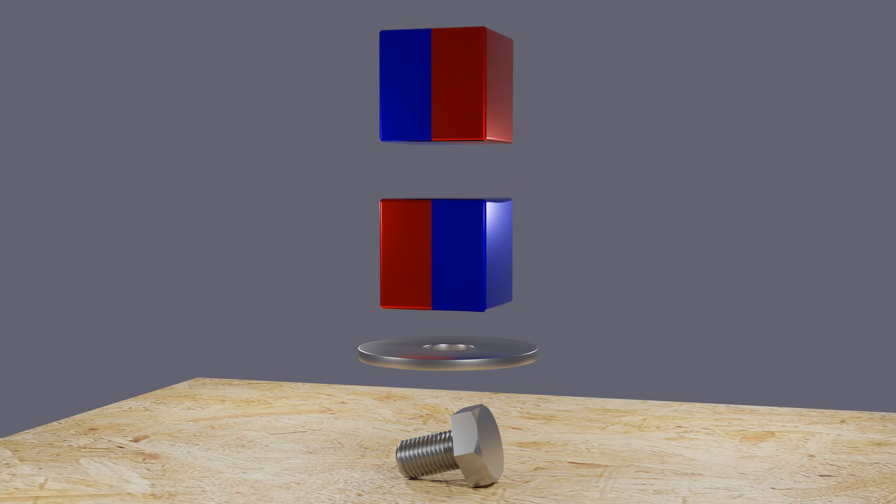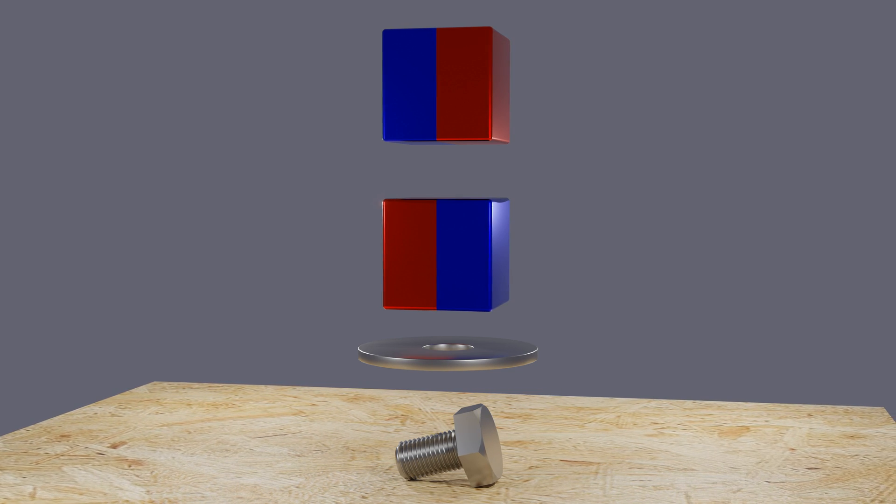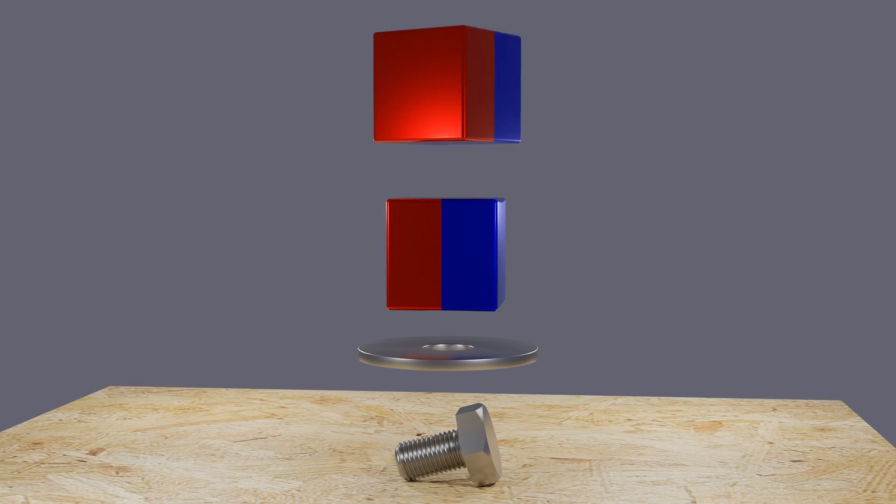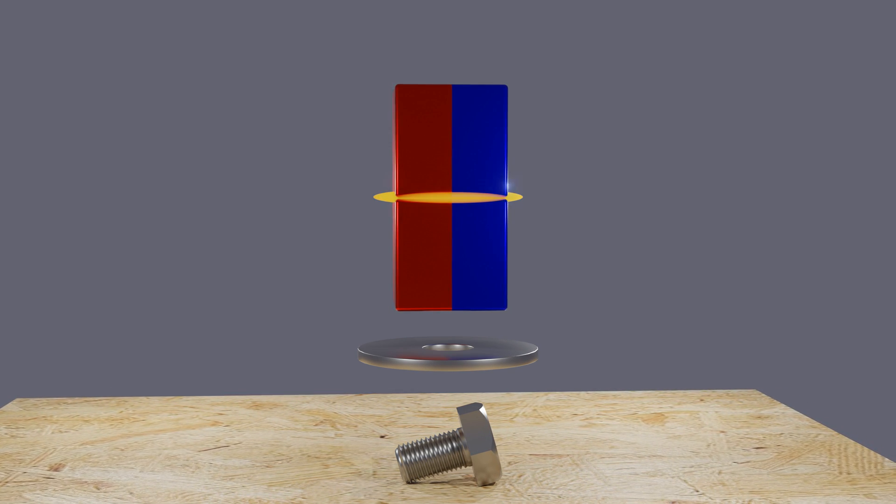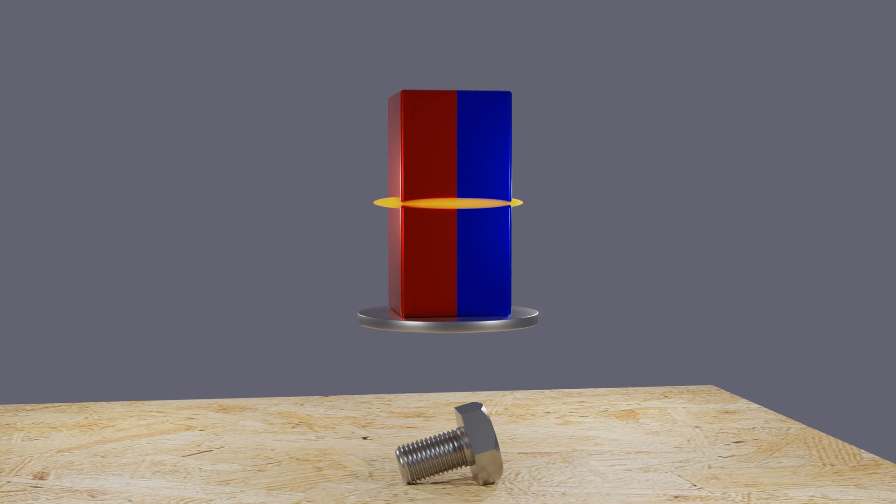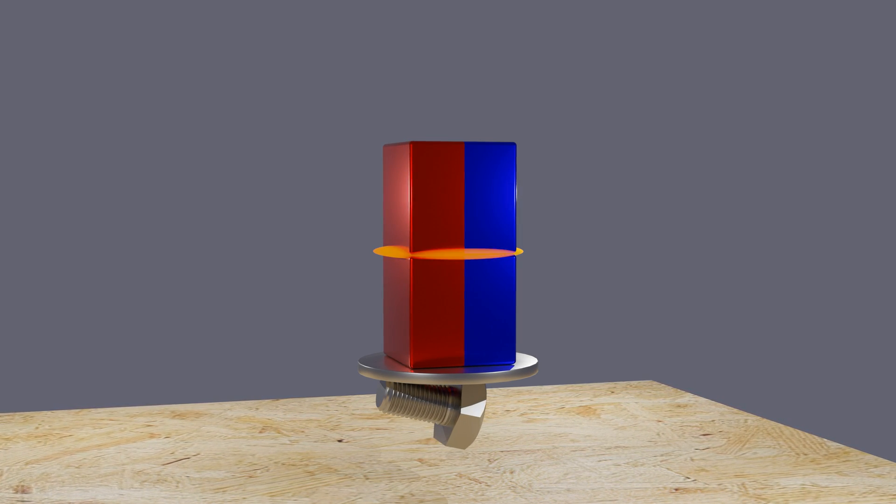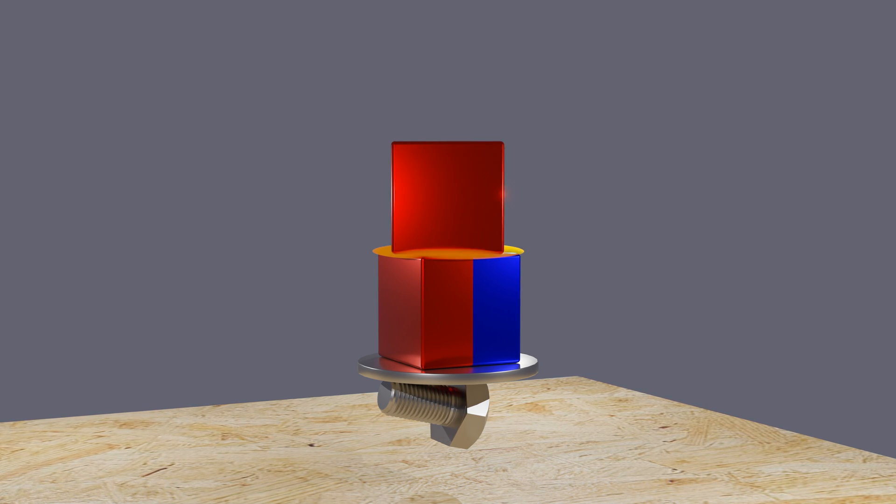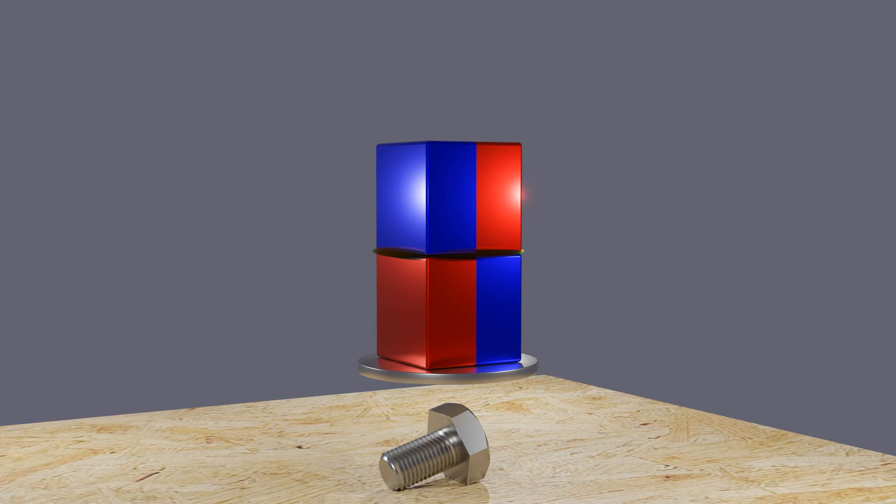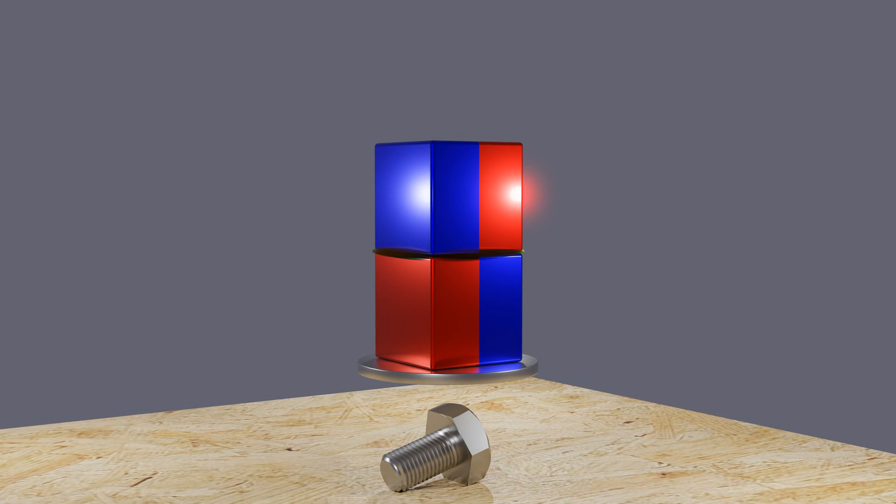Now, we turn the upper magnet by 180 degrees. There's a repulsion between the magnets because the same poles meet. Here too, the metal disc is attracted. This time, however, the screw can also be lifted because the magnetic field spreads beyond the metal disc. This is how the magnetic switch works in theory.